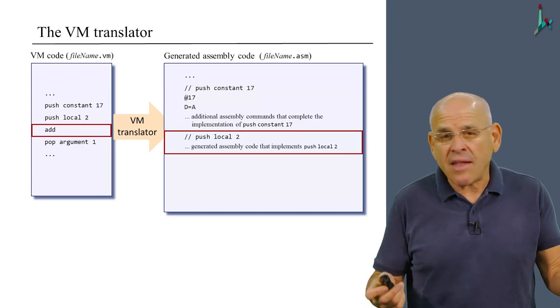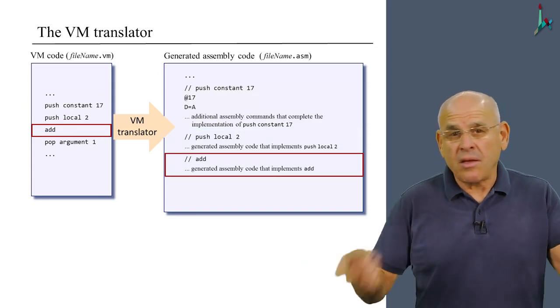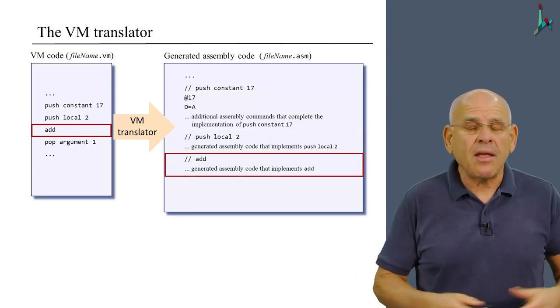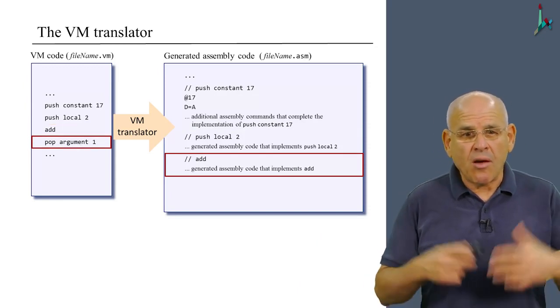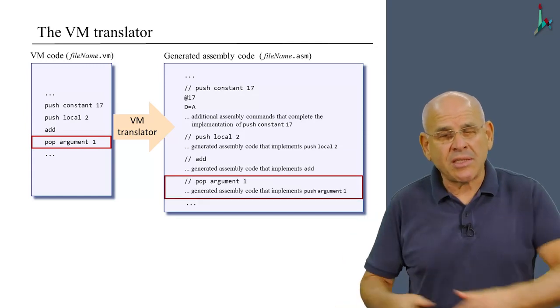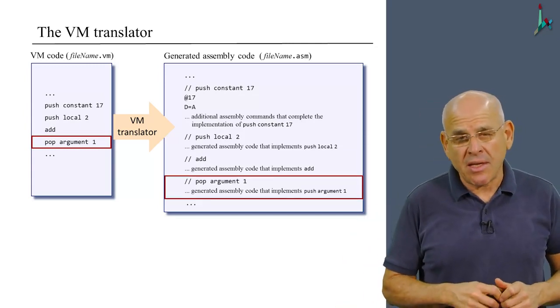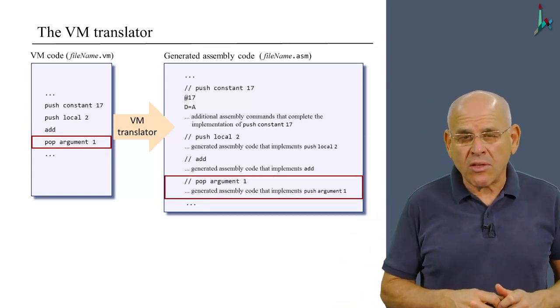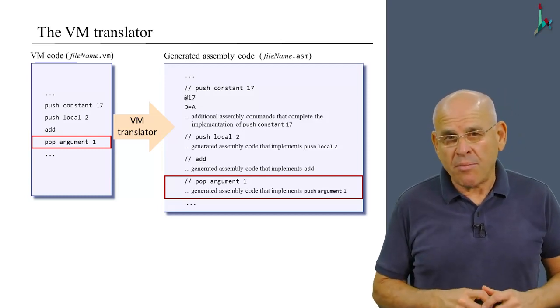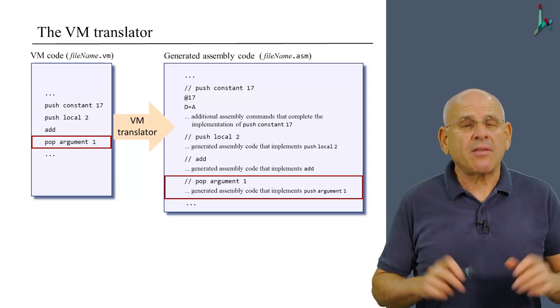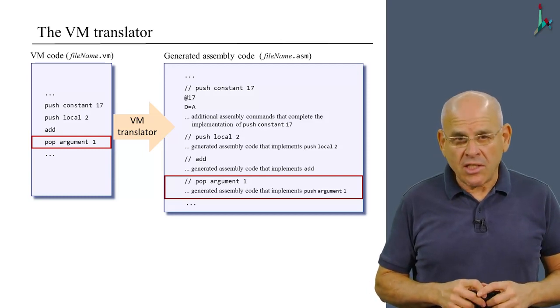It reads add and does some hocus pocus in assembly that causes a stack-oriented add operation. Pop local 2 is translated into a set of assembly commands that represent pop local 2, and so on, until the end of the input file. So that's what the VM translator is all about.